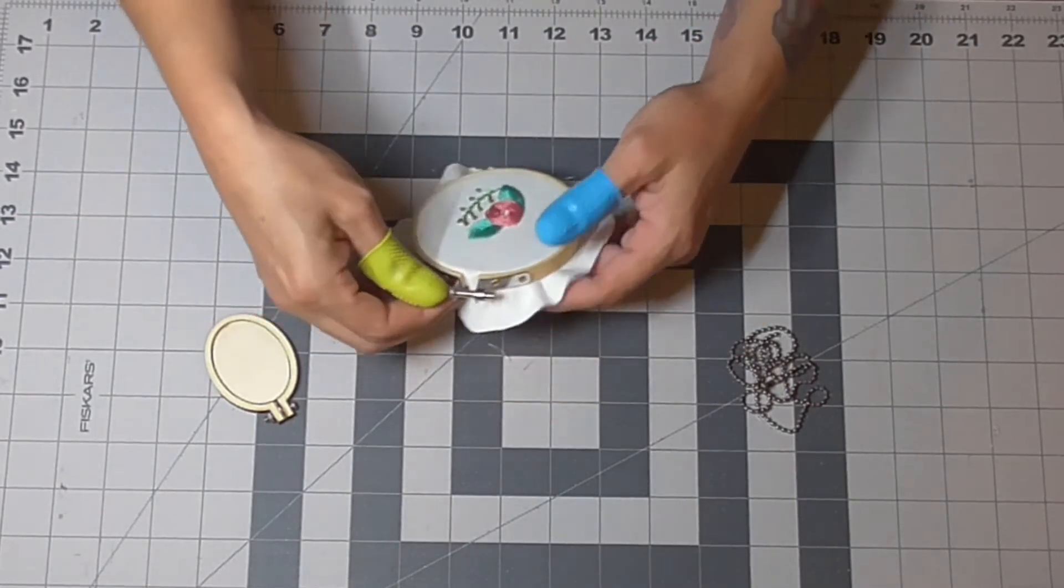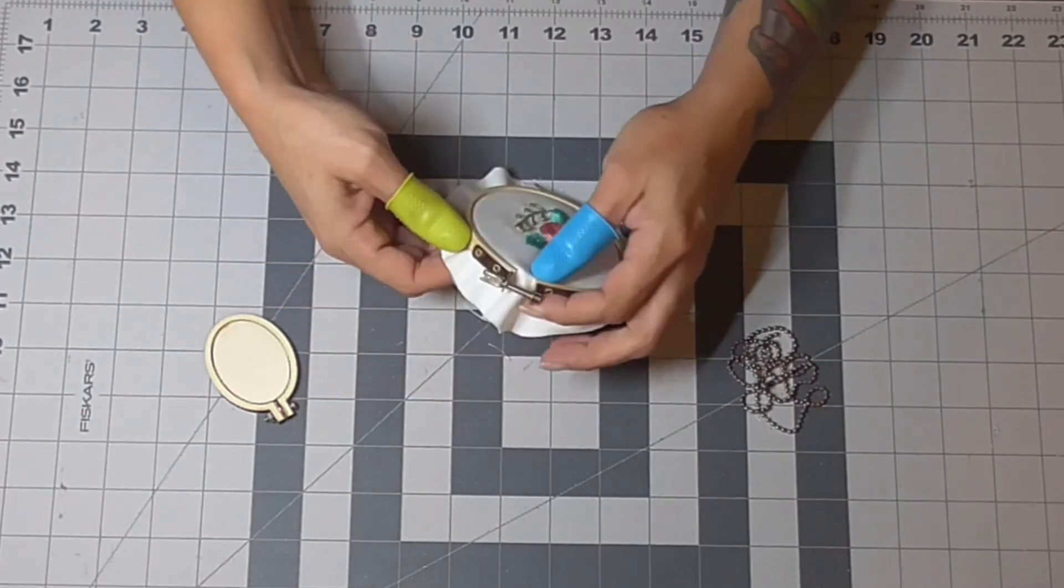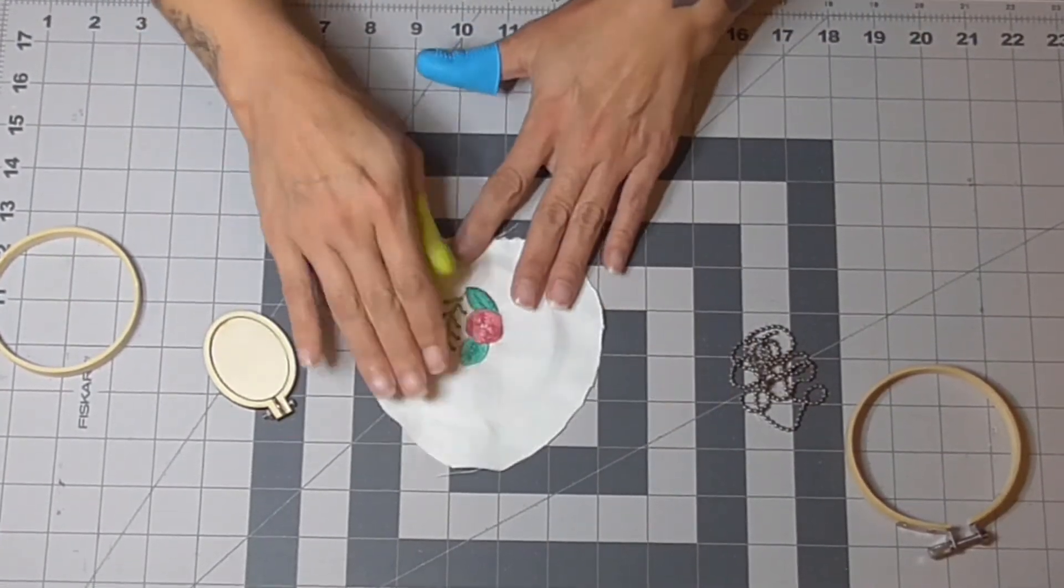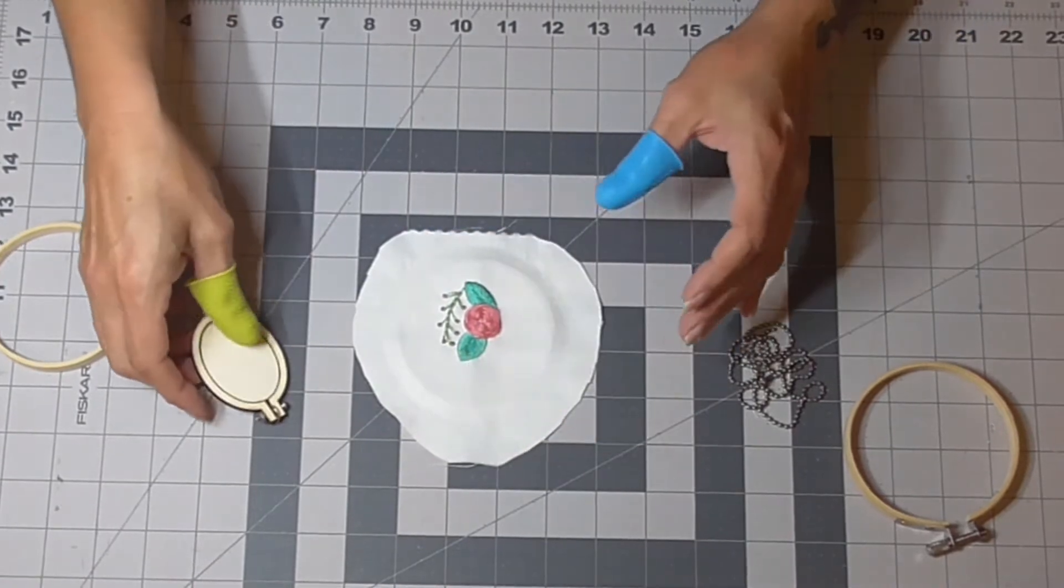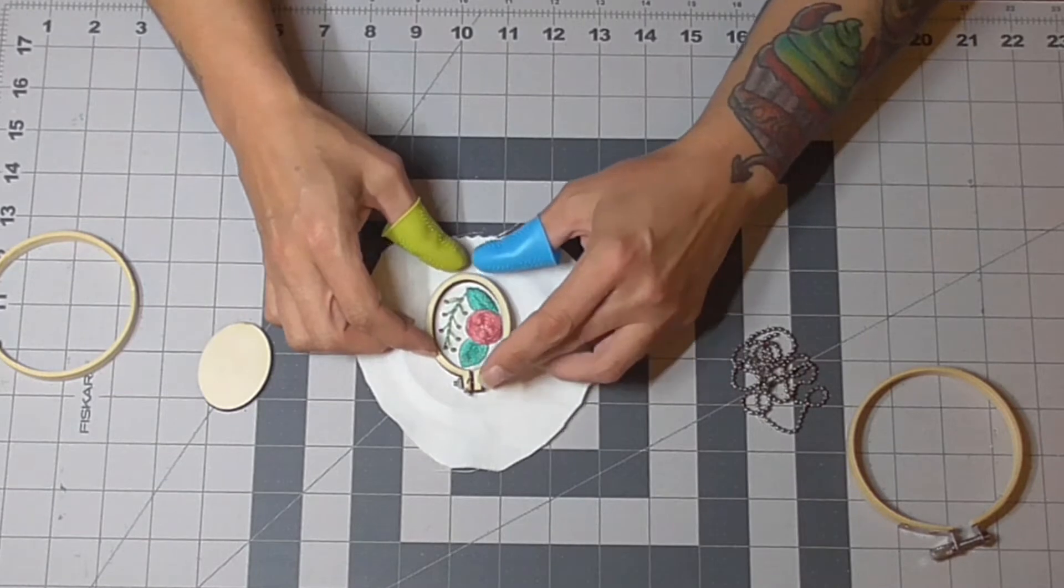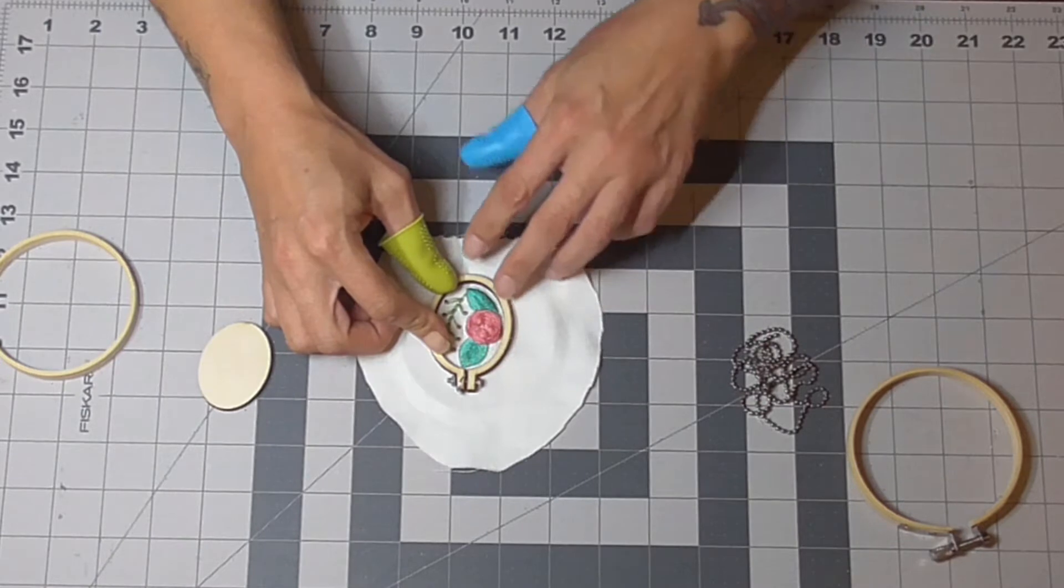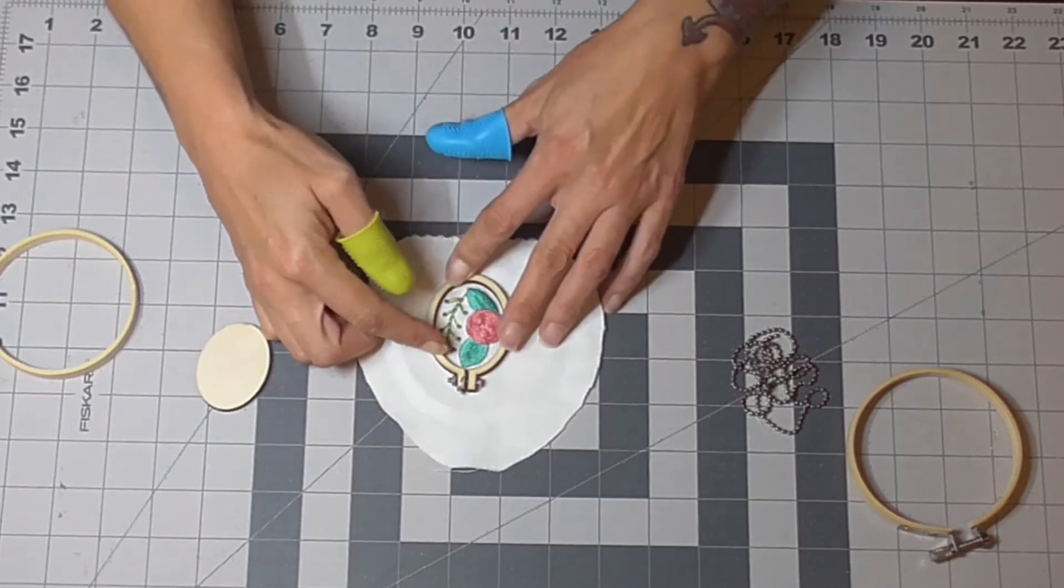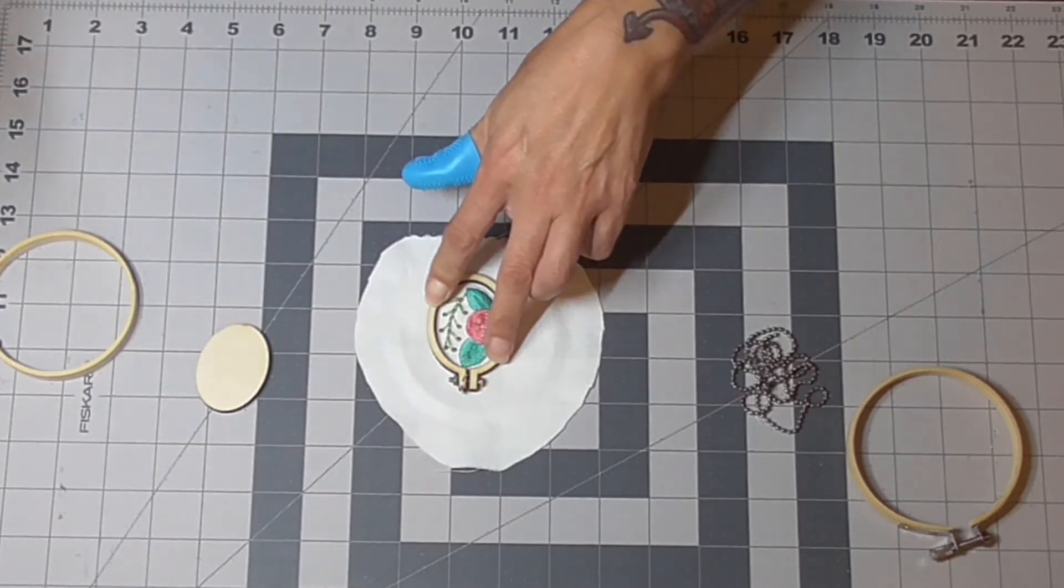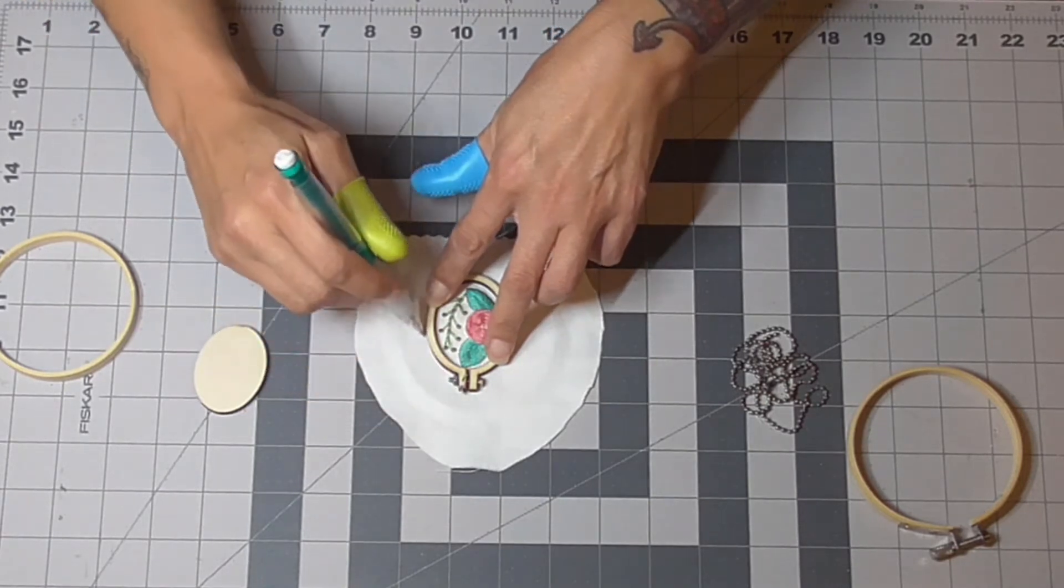Once you've got your stitching all done, you're going to unhoop it and lay it flat, take this piece out, and you want to center it so that your design is in the middle. Take a pencil and draw a line on the outside of the frame.